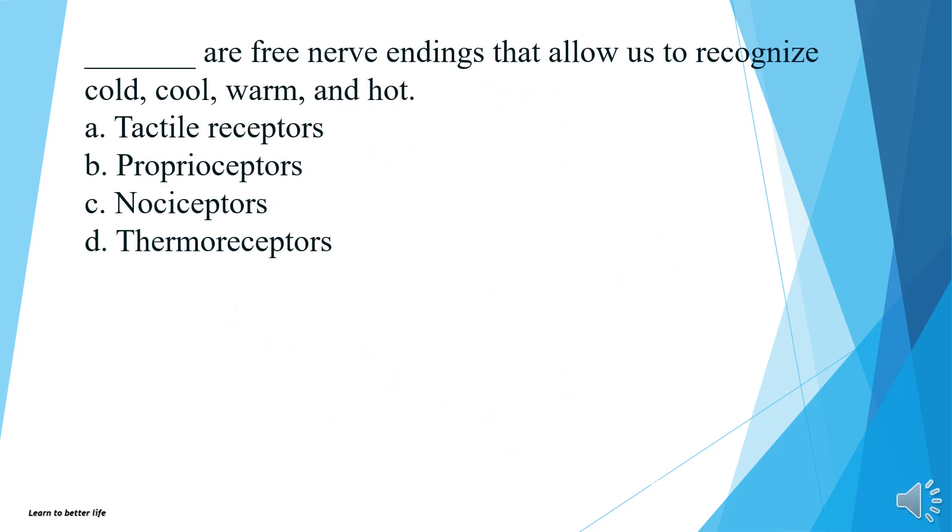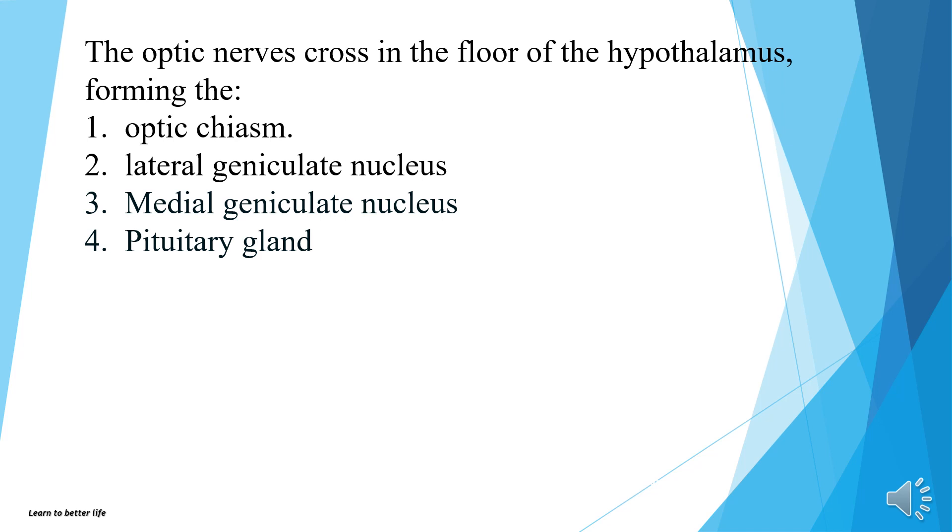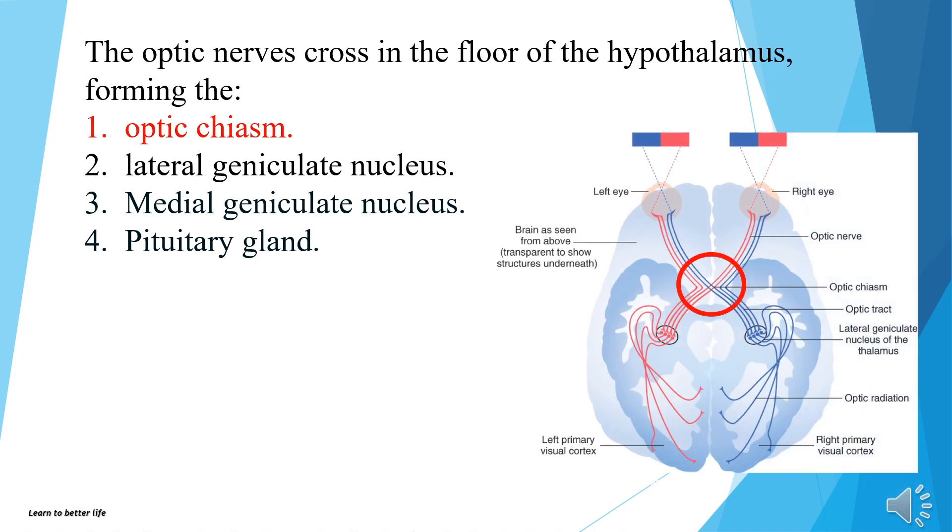What are free nerve endings that allow us to recognize cold, cool, warm, and hot? Tactile receptors, proprioceptors, nociceptors, or thermoreceptors? The answer is D, thermoreceptors. The optic nerves cross in the floor of the hypothalamus, forming the optic chiasm, lateral geniculate nucleus, medial geniculate nucleus, or pituitary gland? The answer is A, optic chiasm.